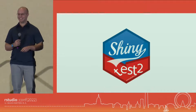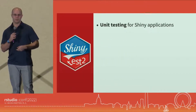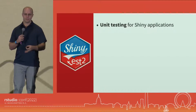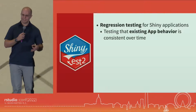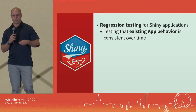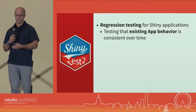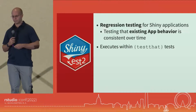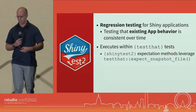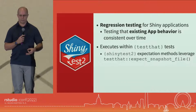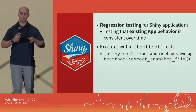I'd like to take these two worlds and combine them — here's where we get ShinyTest2. ShinyTest2 is unit testing for Shiny applications, but I'd actually adjust that: it's more regression testing for Shiny applications. You have existing app behavior you've seen through manual testing, and you don't want to lose it. It executes within testthat, so there's a familiar framework. The extra helper methods in ShinyTest2 all leverage testthat snapshot file — it's orchestrating everything into a nice package.